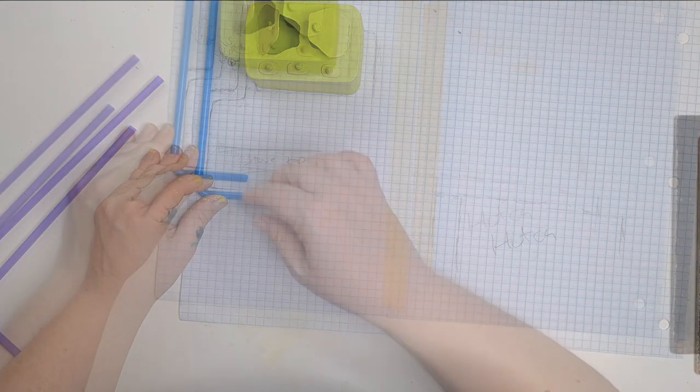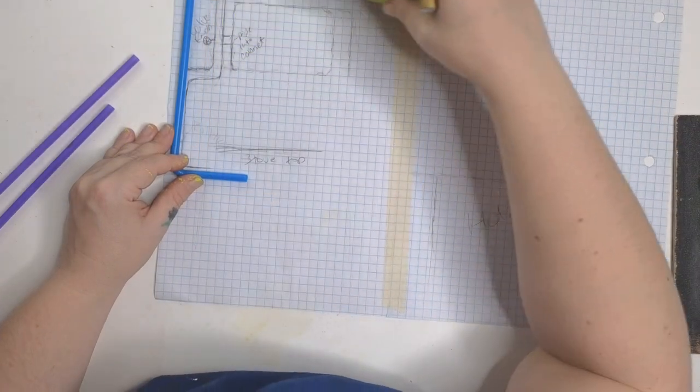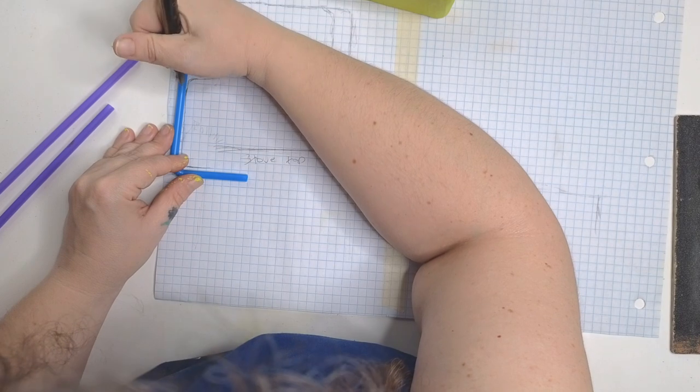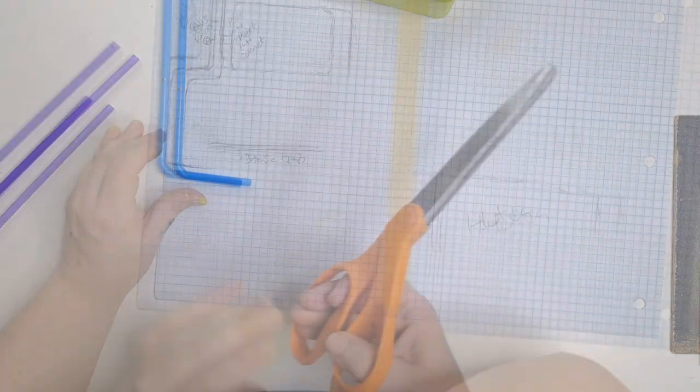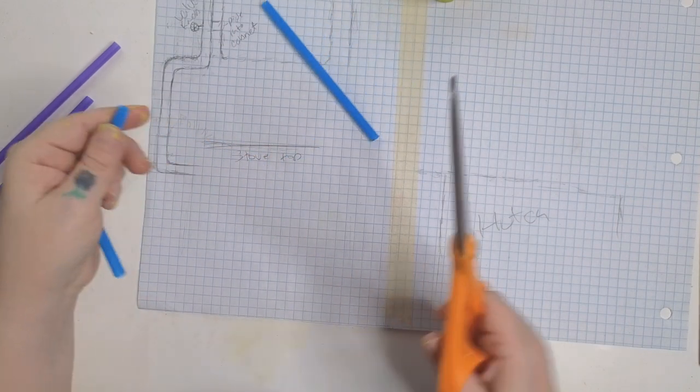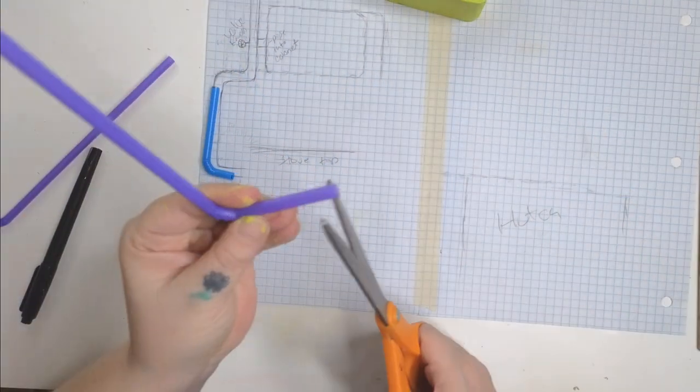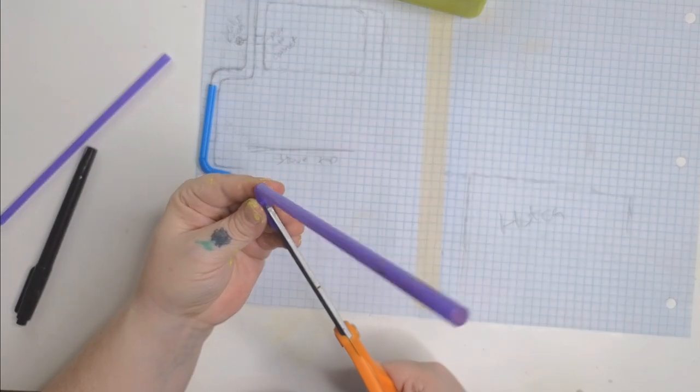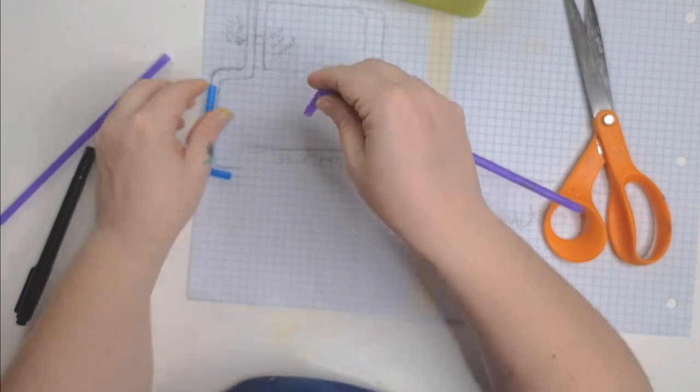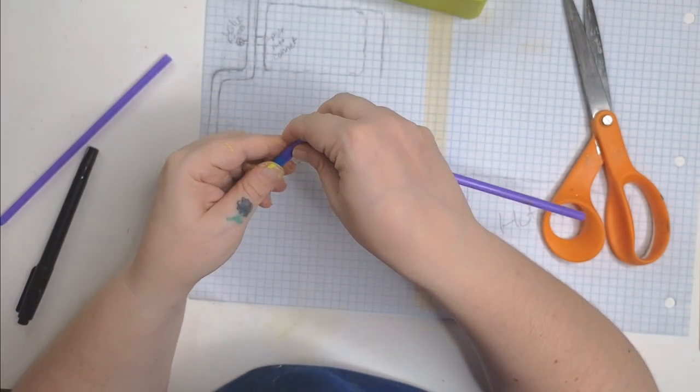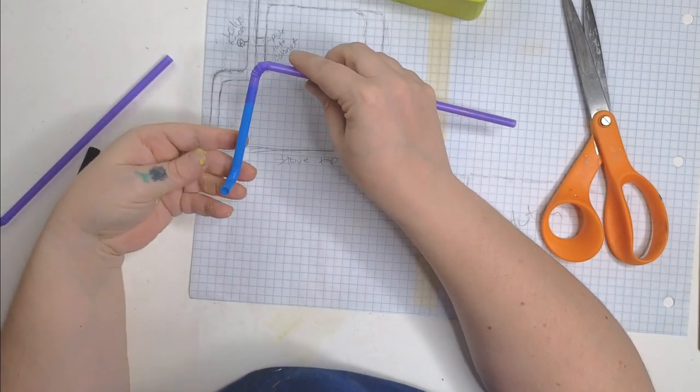To make sure I was getting the layout right, I took some of my graph paper and laid it up against the wall in the dollhouse and matched up where the stove pipe came out of the stove, up the wall, and into the cabinet. Now I know where my tubes are going and how long they need to be. Because the straws are the same size round, cut a split up the side just a little bit so you can fit one inside the other, and use super glue as you go. E6000 would also work if you wanted to go that route.